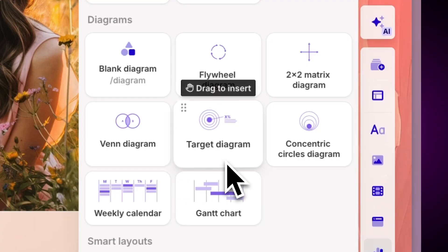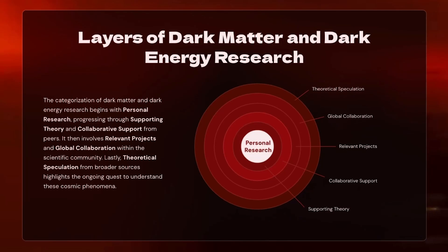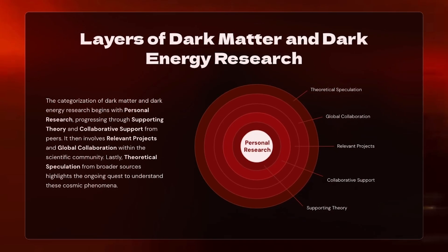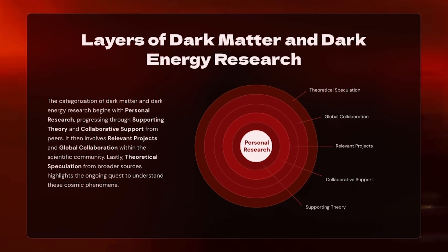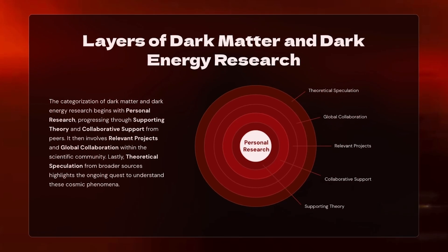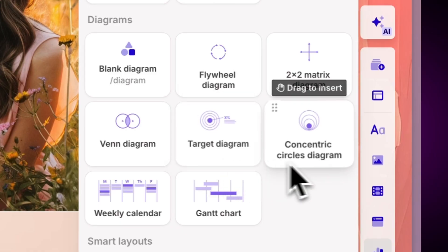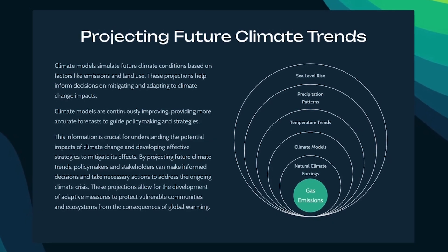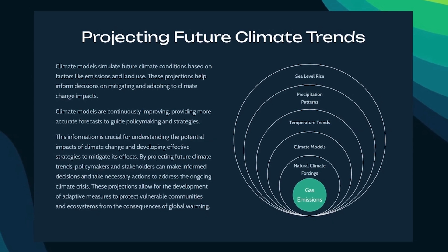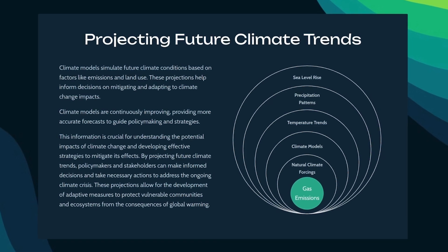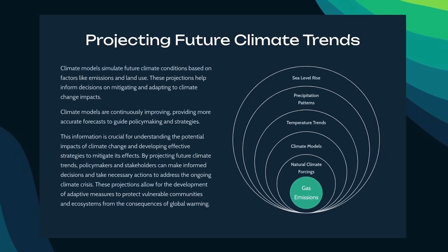Target Diagrams help visualize different strategies that work towards one goal, allowing you to understand how secondary objectives align and support the main target. Concentric Diagrams are useful for showing hierarchical relationships or layers within a system or a business, and indicate how the levels of these relationships are interconnected.